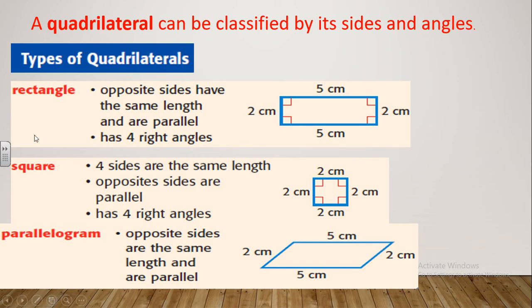The first one is the rectangle. The rectangle is a quadrilateral. Let's know some information about the rectangle. Each two opposite sides are equal in length and parallel. For example, if this side is 5 cm, then its opposite will also be 5 cm. And if that side is 2 cm, its opposite will be 2 cm. You should also know that the four angles are right angles.